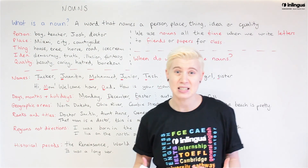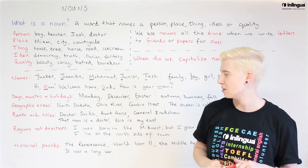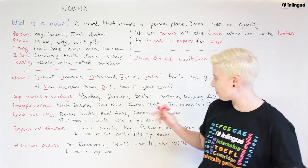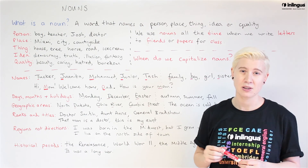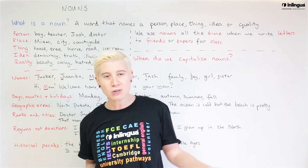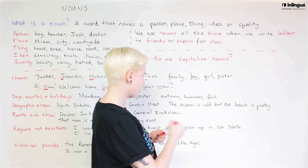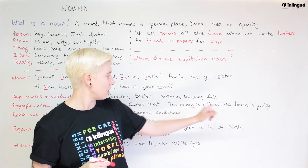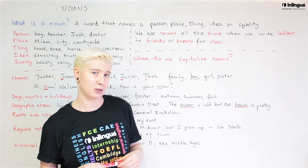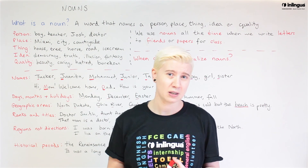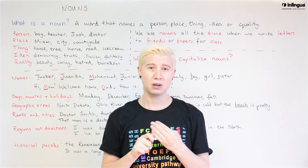Geographic areas — so places. Sometimes we need a capital, sometimes we don't. North Dakota, Ohio River, Canby Street — all of these are specific places, the names of one special place, and they all need capitals. If I'm being more general: 'The ocean is cold, but the beach is pretty' — ocean and beach are very general nouns, not the name of a specific beach or ocean, so I don't need a capital. But if I said 'The Pacific Ocean is cold, but Stanley Park is pretty,' then I would need capitals for Pacific Ocean and Stanley Park.